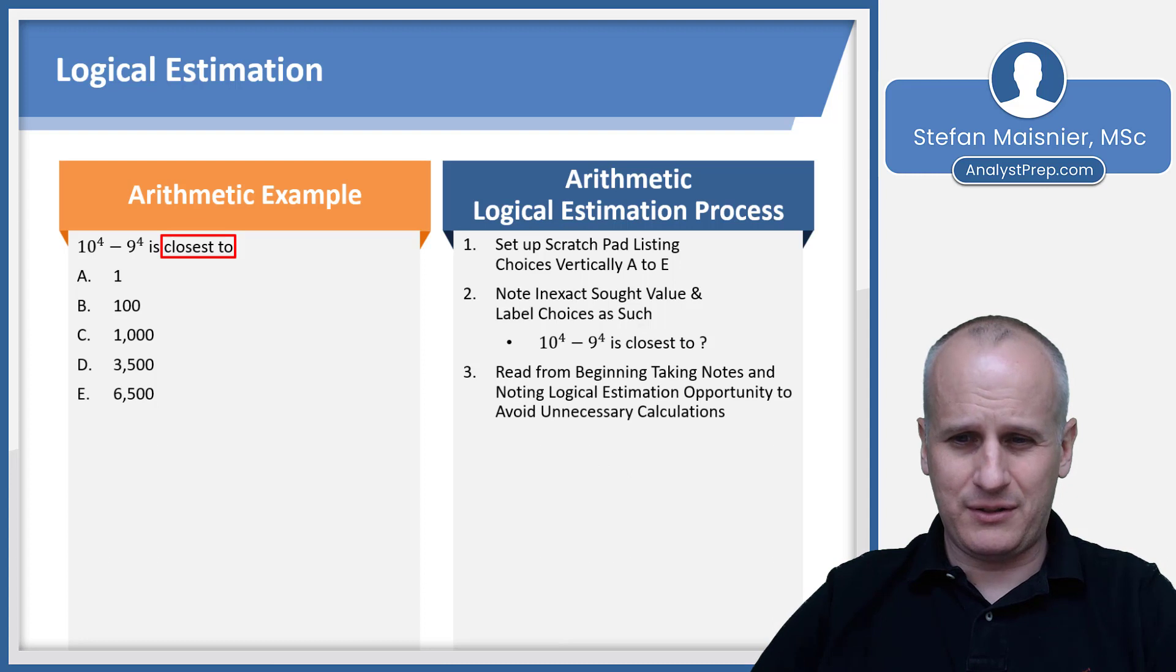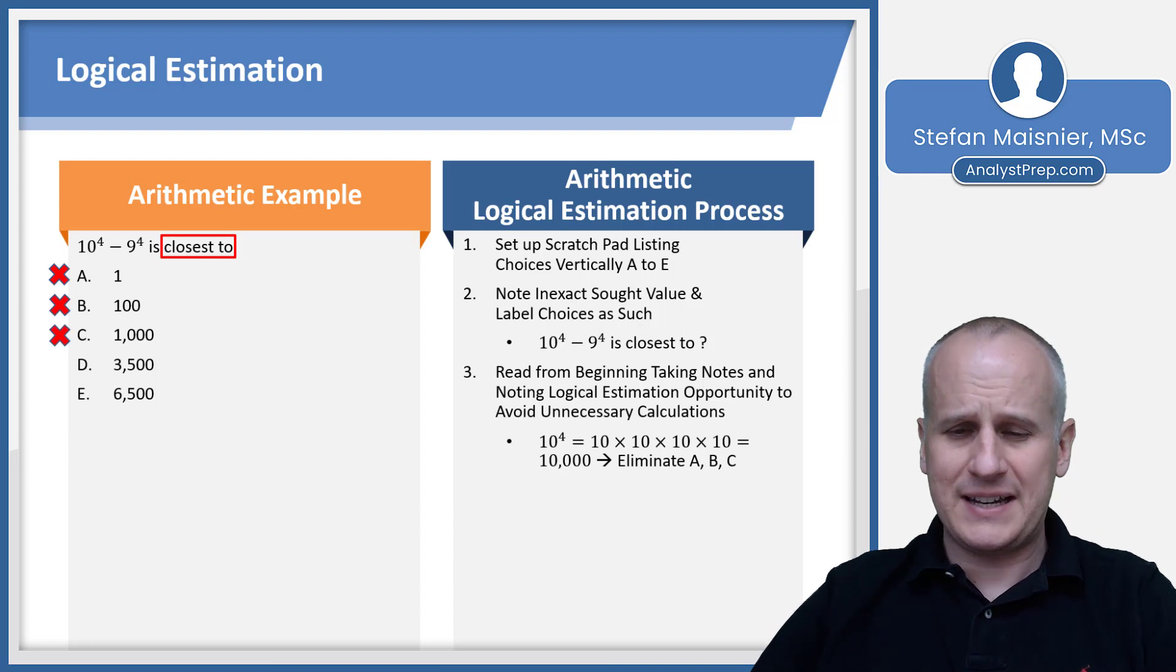10 to the fourth minus 9 to the fourth is closest to is our question. We read from the beginning, taking notes and noting logical estimation opportunity to avoid that unnecessary calculation. So 10 to the fourth means 10 times 10 times 10 times 10, which is 10,000. So it's got to be 10,000 minus something probably a little bit less than 9,000, because that would be 9 times 10 times 10 times 10. So that means it's not going to be 10,000 minus 9,000. We're getting rid of A, B, and C immediately.